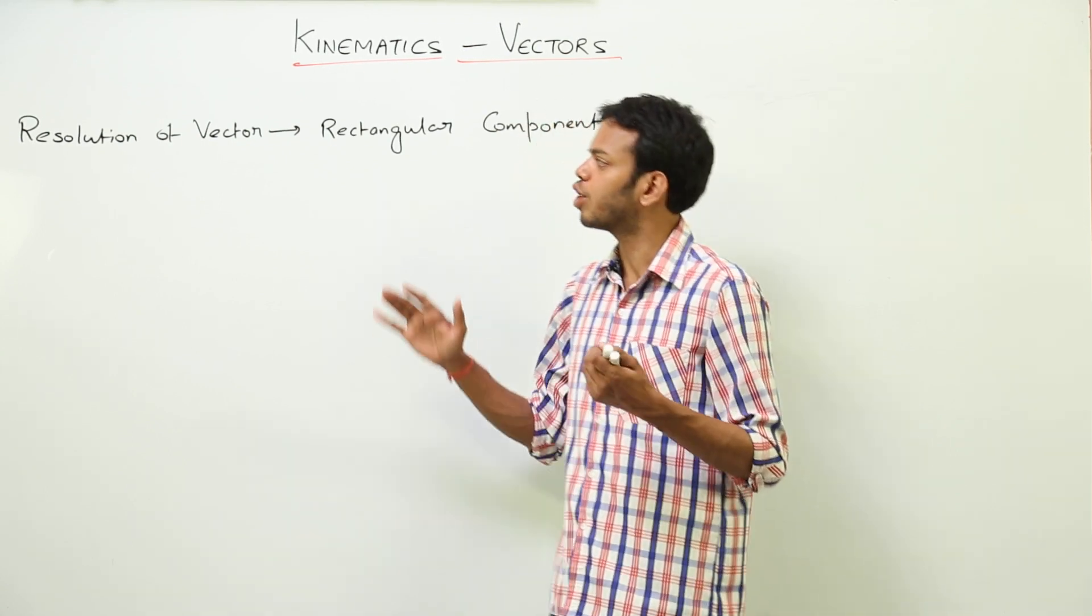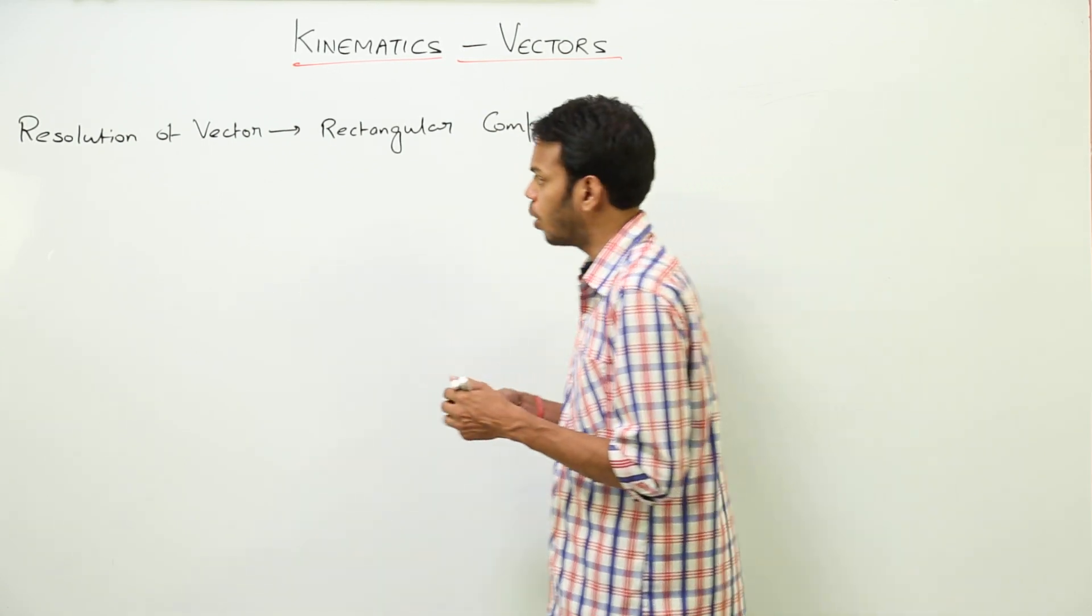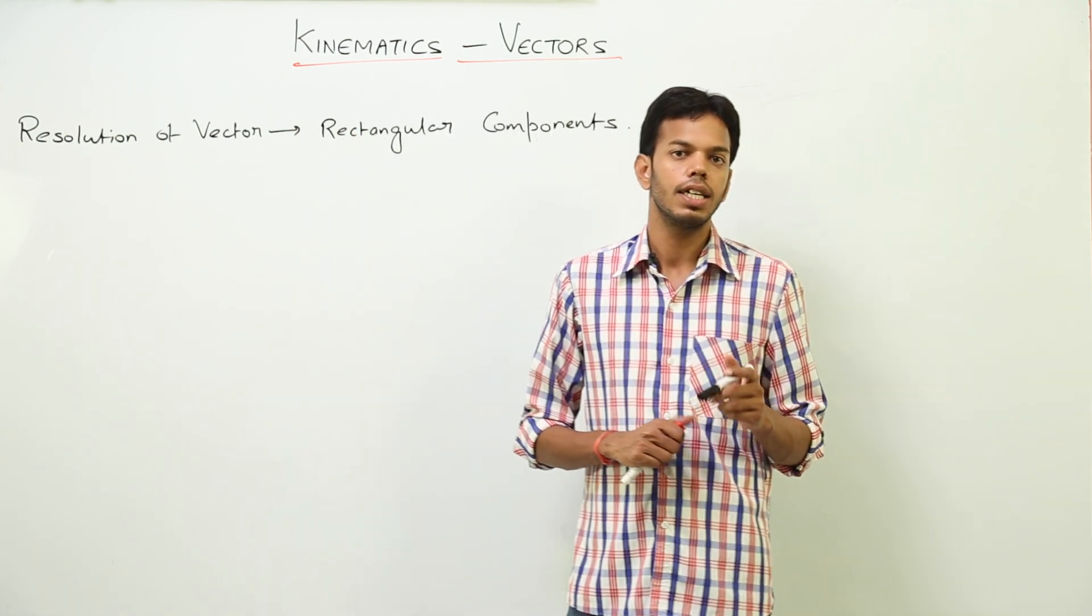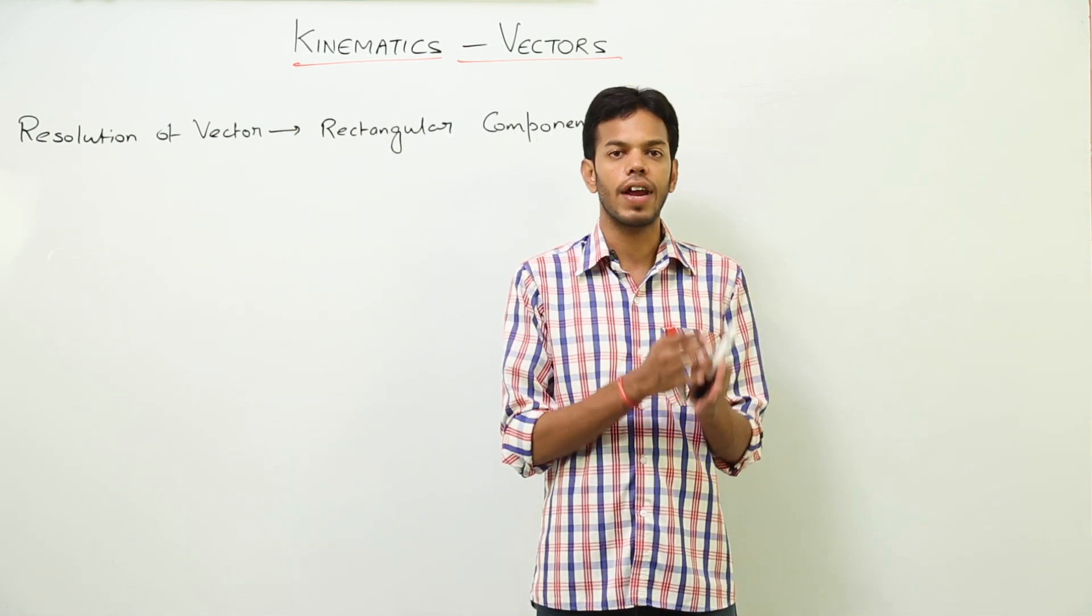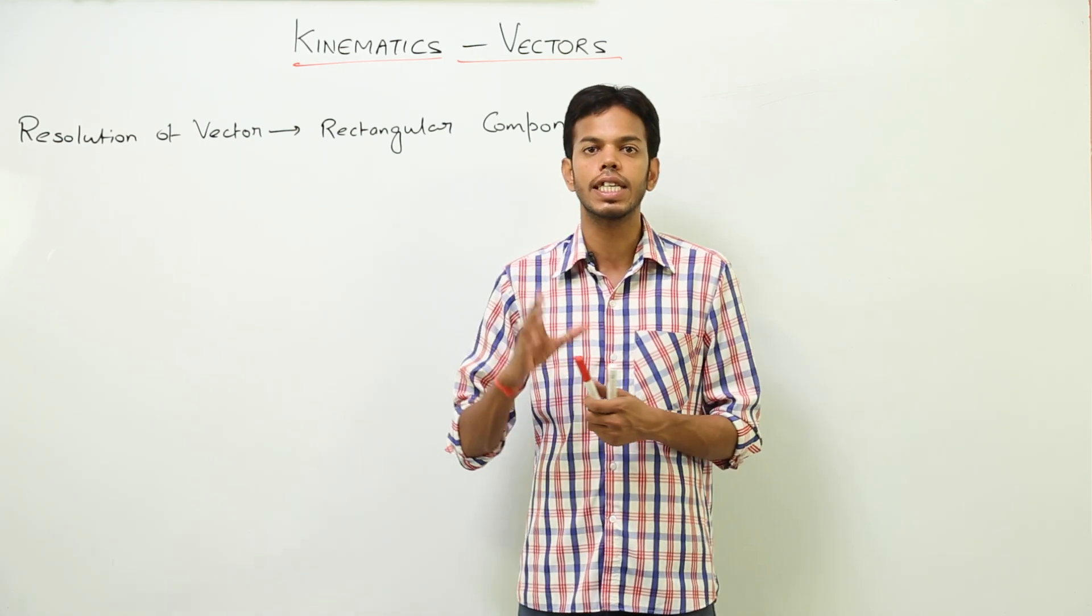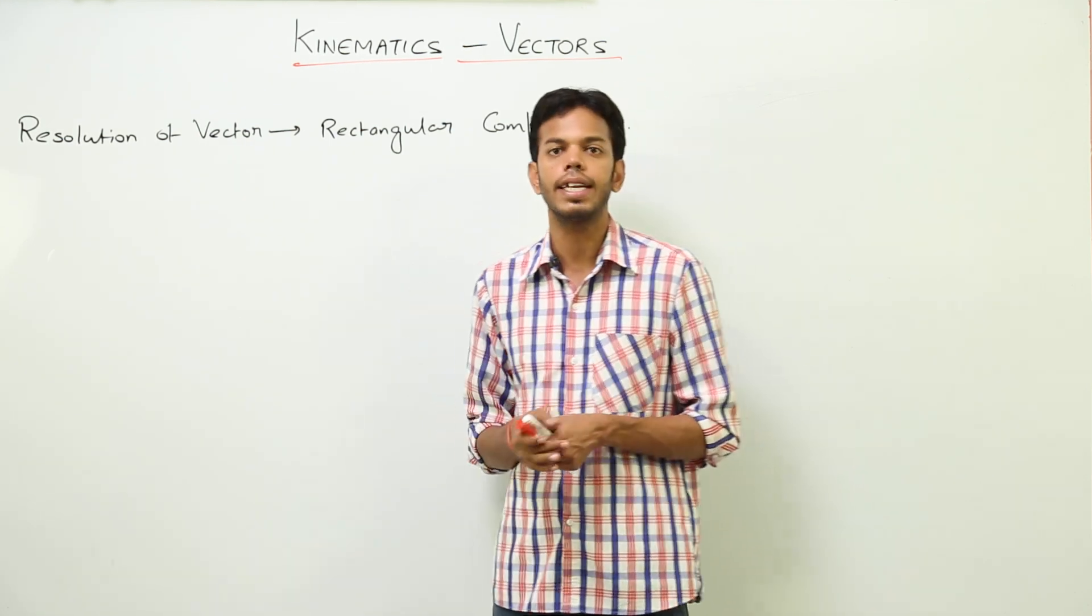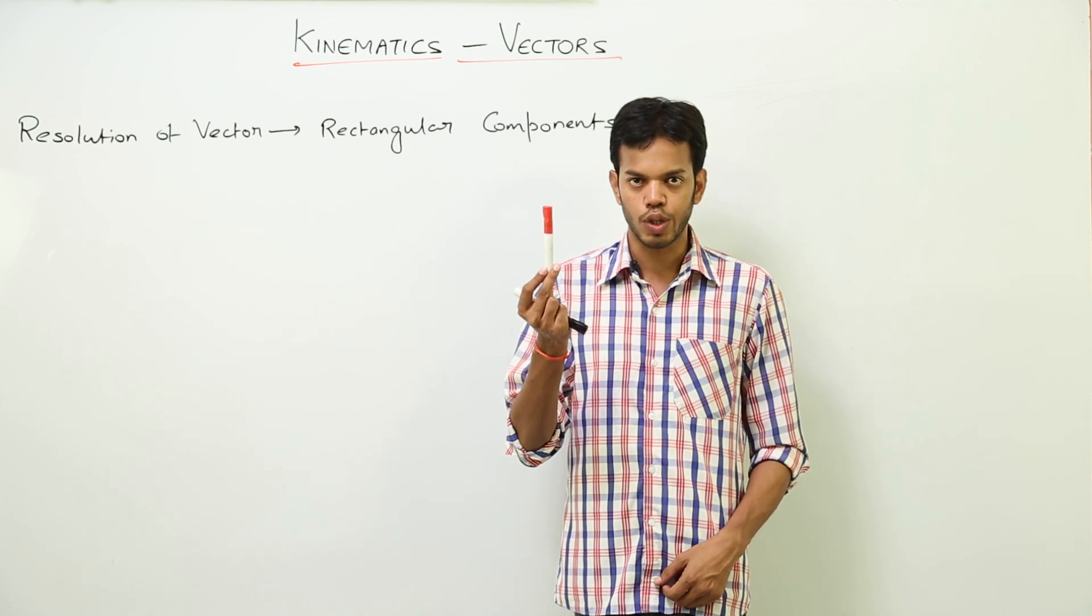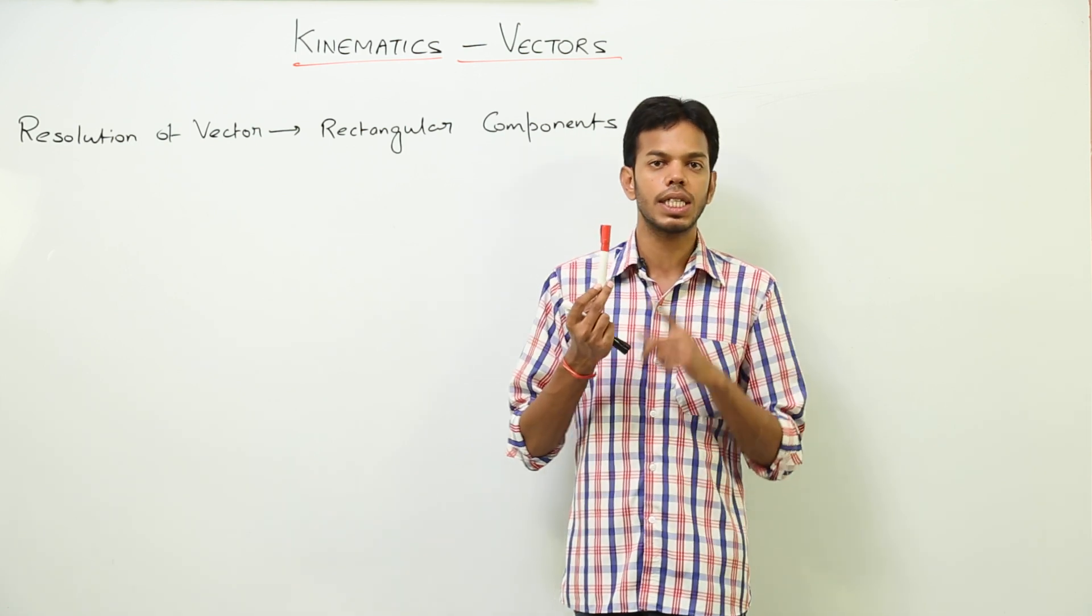So what does this resolution of vector mean in rectangular components? About resultant, we have already discussed the fact that resultant is the effective or net effect which a single vector will produce. Instead of suppose this pen is acted upon by two or three forces, the resultant vector would be a single vector force which is equivalent to all of the individual forces.